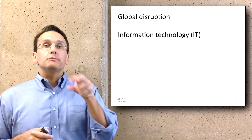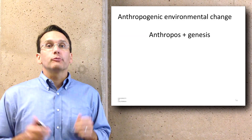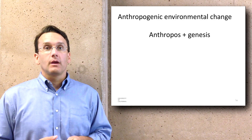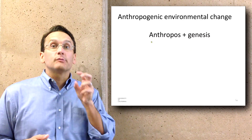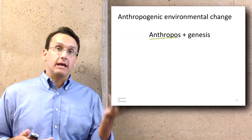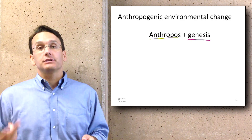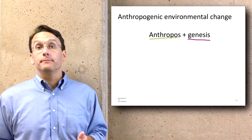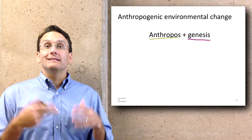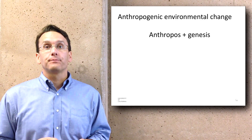The first main topic of this class is anthropogenic environmental change. The word anthropogenic comes from two Greek words: anthropos, which means human, and genesis, which means origin. Together this means environmental change that is of human origin.